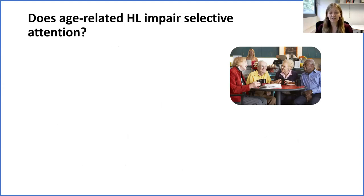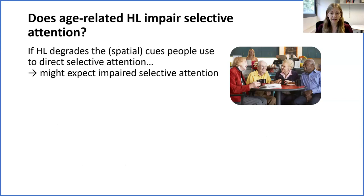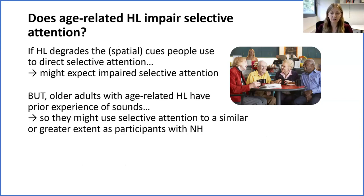An interesting question is whether age-related hearing loss produces similar reductions in preparatory attention. If hearing loss impairs selective attention directly because it degrades cues that people rely on for directing spatial attention, then hearing loss at any age should impair selective attention similarly. On the other hand, older adults have lots of prior experience of sounds before they experience hearing loss, and it's possible that this experience could be utilized to direct preparatory attention despite hearing loss — in a similar way to how someone who loses a limb may retain some neural circuitry for initiating movements. So people with age-related hearing loss might show similar or even greater selective attention to compensate.